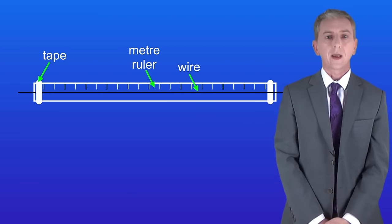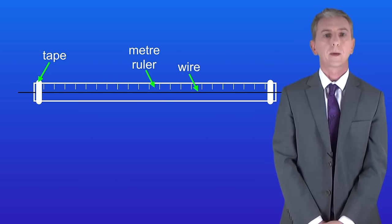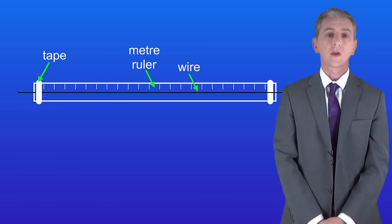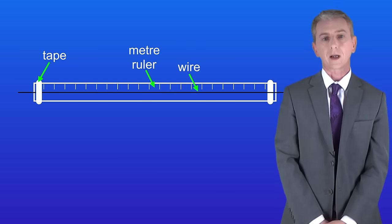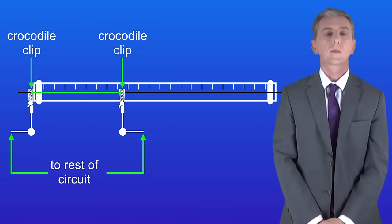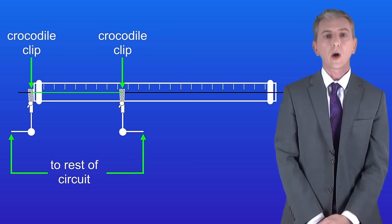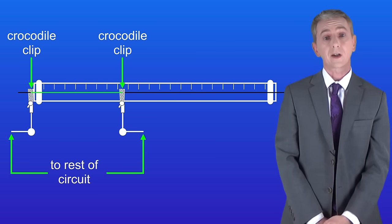We've attached a wire to a meter ruler using tape. I'm now going to connect the wire into the rest of the circuit using two crocodile clips like this. What this means is that only the part of the wire which is between the two crocodile clips is actually connected to the circuit.